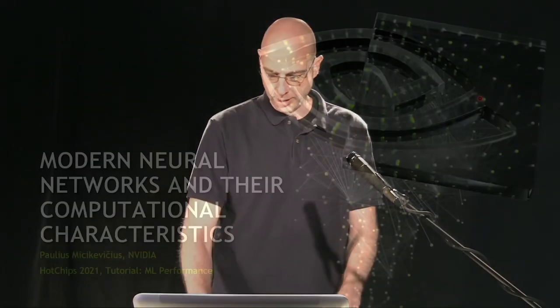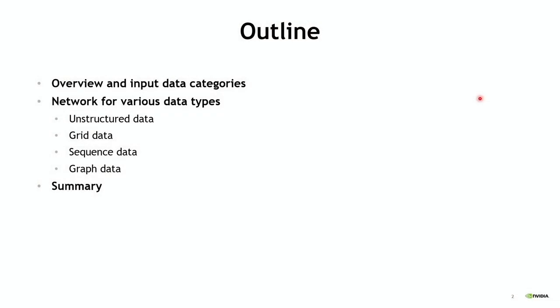Thank you, Natalia. As David and Natalia mentioned, this first talk will attempt to give a quick survey and overview of various neural network architectures in use today and talk about their computational characteristics. The agenda: we'll start with a high-level overview of how a neural network operates, look at a few fundamental layer categories, then look at various input data categories — because the neural network structure and operation really follows the input data that is fed into the network. We'll try to summarize things at the end.